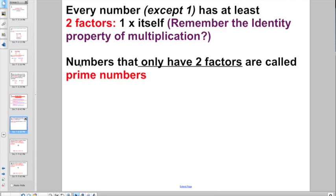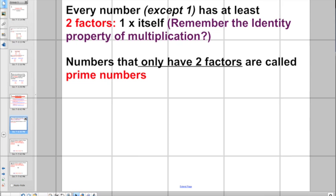Numbers that have only 2 factors are called prime numbers. We had to throw that out there, but it's not going to factor too importantly today.